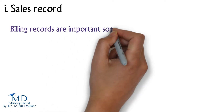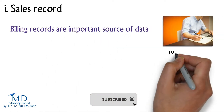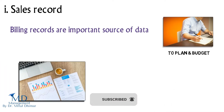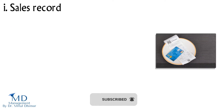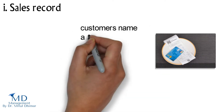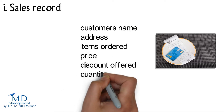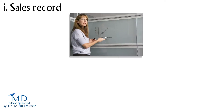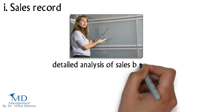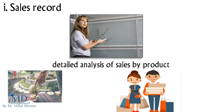1. Sales record: Billing records are an important source of data for marketing managers to plan and budget and to determine whether performance is meeting expectations. A bill will generally include customer's name, address, items ordered, price, discount offered, quantity, date of sales, etc., which is very helpful to managers to make detailed analysis of sales by product, geographical area, customer, etc.